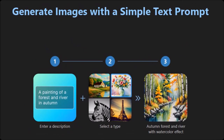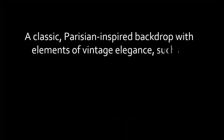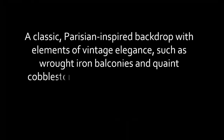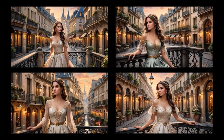In this first example, you write a prompt to describe the image, then choose the type of image, and then PhotoDirector will generate the image based on your prompt. For example, I used this prompt — and you want to be as descriptive as possible to get the best results — and it generated beautiful images like you see here.